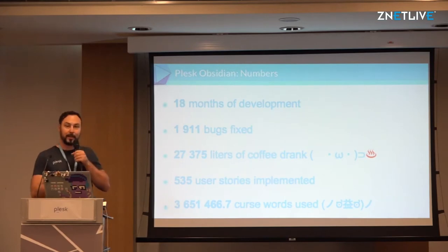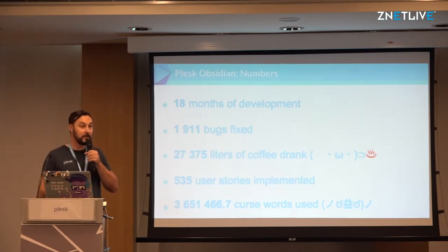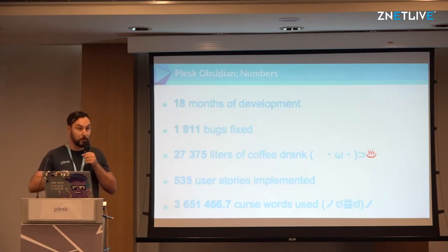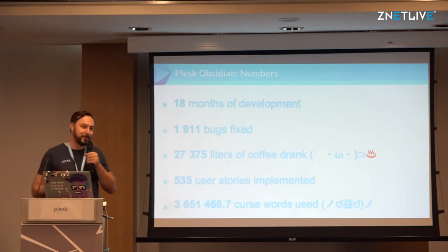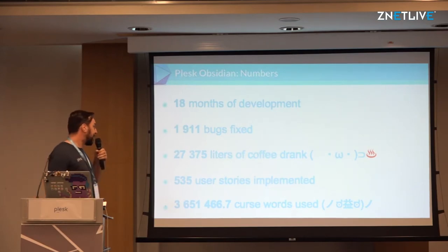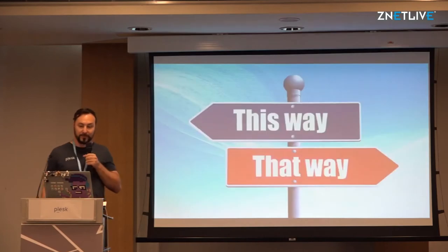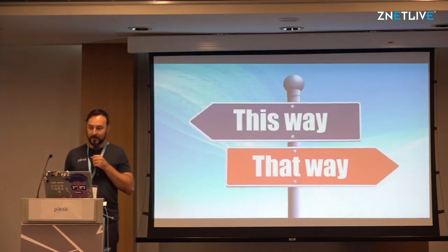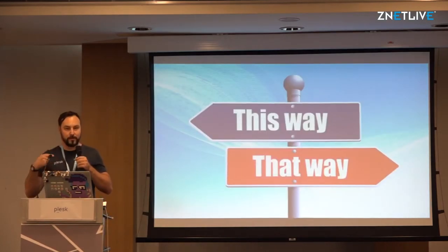We had a lot of curse words during development — especially when fixing bugs. About 3 million something .7, don't ask. I've already had questions about whether these were unique curse words or repeating. We're not that good — we had to repeat some and invent some. Speaking of numbers, let's talk about how numbers drive our decisions.